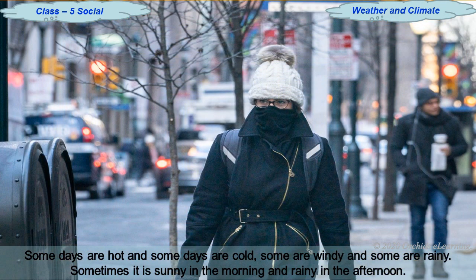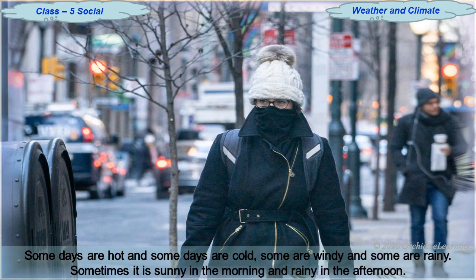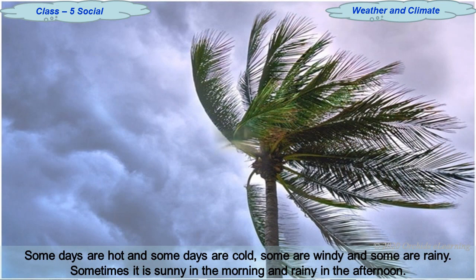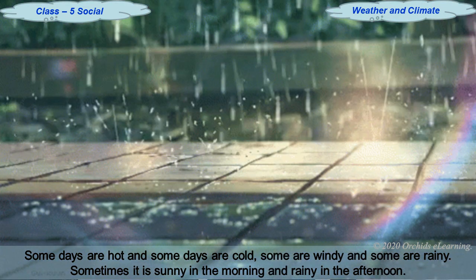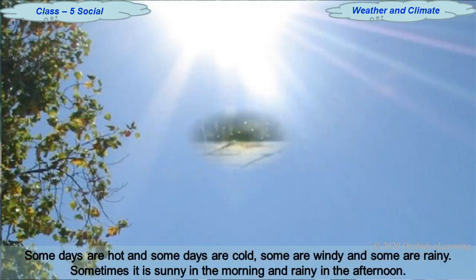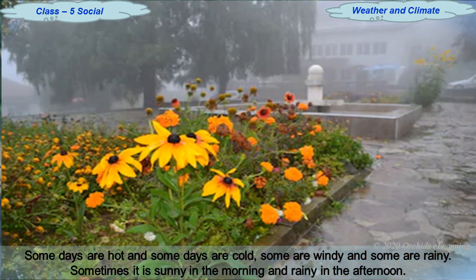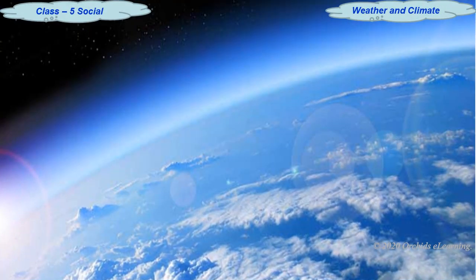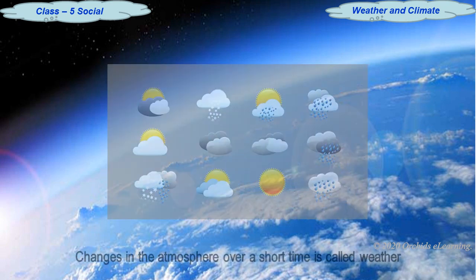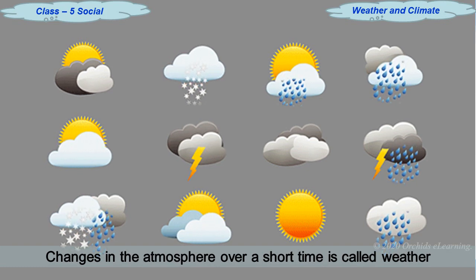Children, we all are aware that some days are hot and some are cold, some are windy and some are rainy. Sometimes it is sunny in the morning and rainy in the afternoon. This happens because of the changes in the atmosphere of a place. These changes in the atmosphere over a short time are called weather.